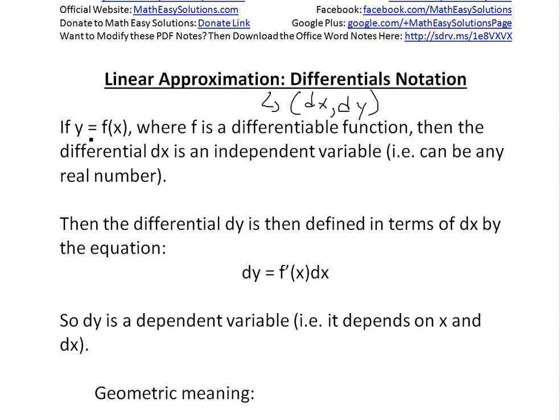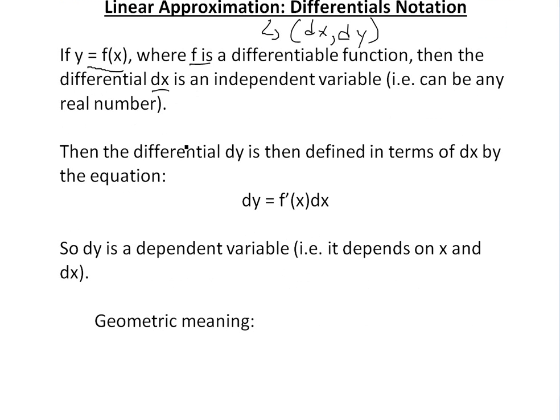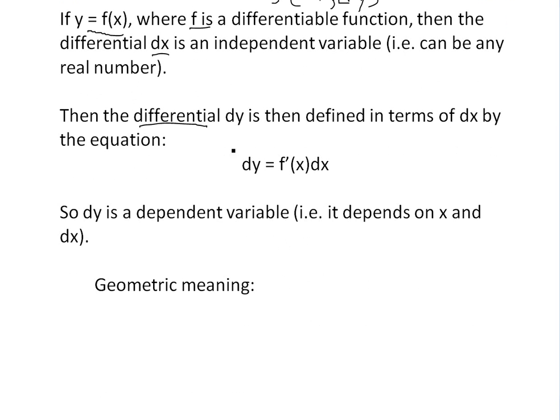So basically, if we're given y is equal to f of x, where f is just a differentiable function, meaning you can take the derivative of it or derivative exists, then the differential dx is an independent variable, which basically means can be any real number. So you just pick any number. Then the differential dy is then defined in terms of dx by the equation: dy equals the derivative of f of x or f prime of x times dx.